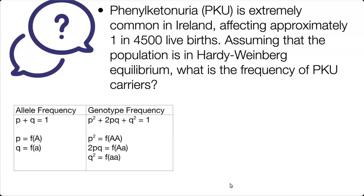Write down your equations: the allele frequency equation and the genotype frequency equation, and identify which variables the question gives you and what variable the question is asking for. It gives us Q squared — one in 4,500 is Q squared — and it is asking for the frequency of carriers, which is 2PQ.